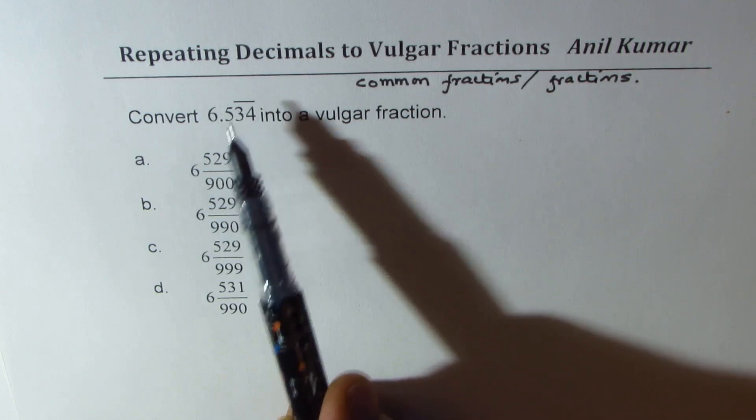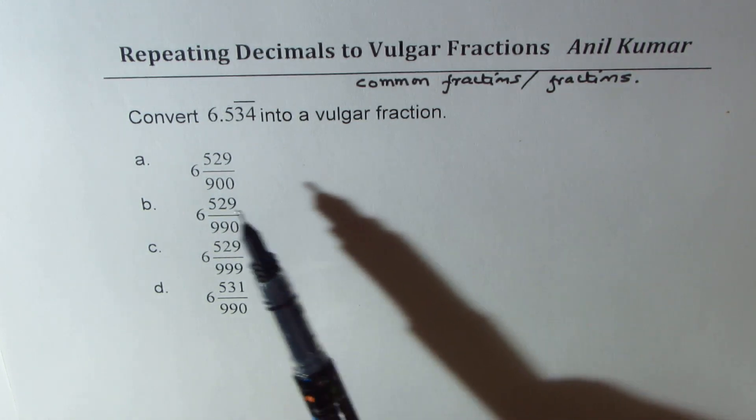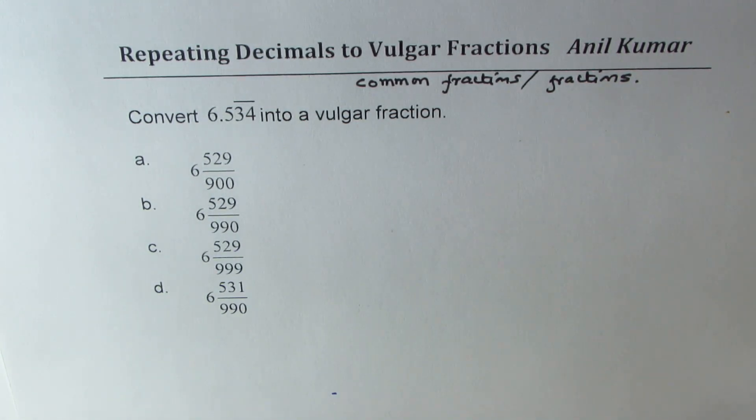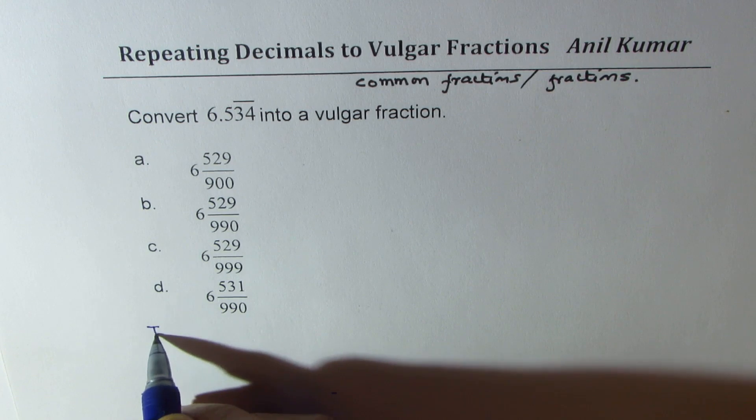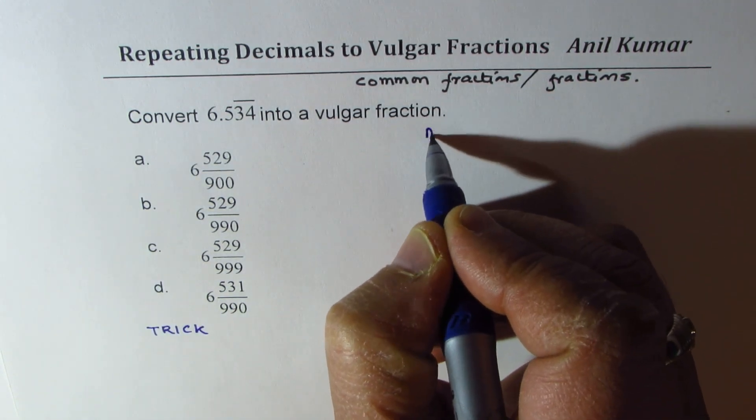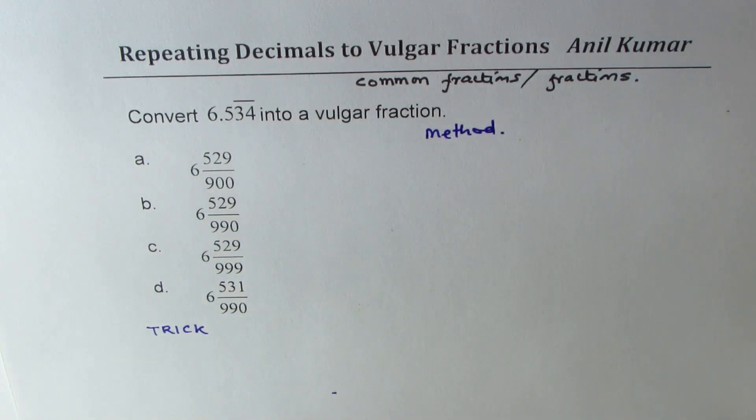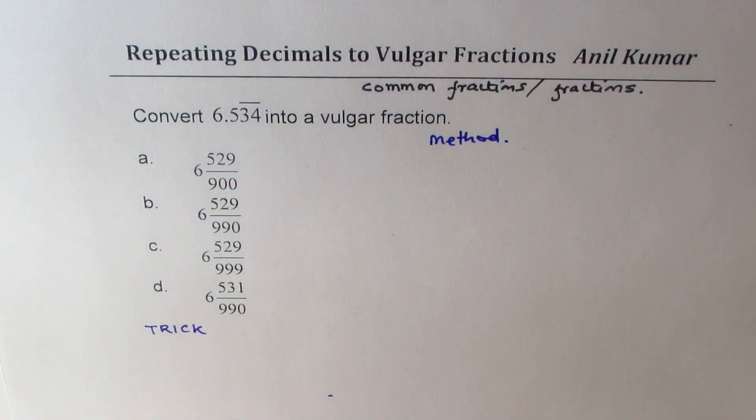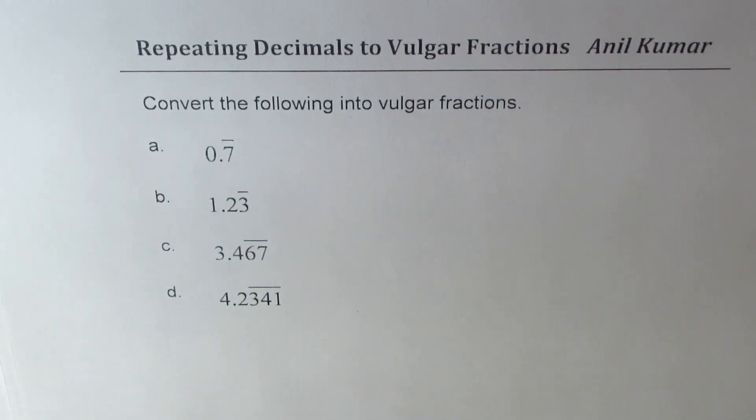The question for us is to convert 6.534 recurring into a vulgar fraction. Four choices are given to us. Now we'll do it in two different ways - one will apply the trick to do it and then we'll apply a method to do it. So in this particular exercise we'll also practice and see how the trick can be applied.